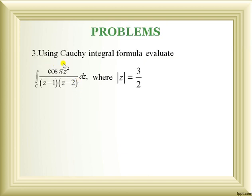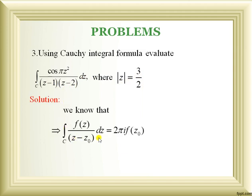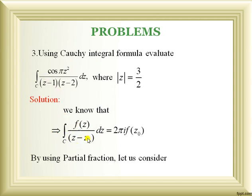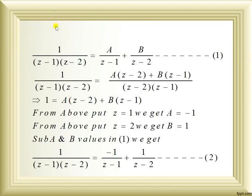Problem 3: Using Cauchy's integral formula, evaluate ∫_C cos(πz²)/[(z−1)(z−2)] dz where |z| = 3/2, i.e., 1.5. The denominator has more than one factor, so we apply partial fractions: 1/[(z−1)(z−2)] = A/(z−1) + B/(z−2).